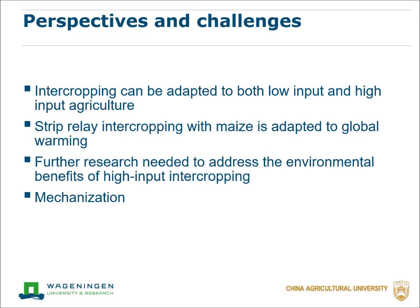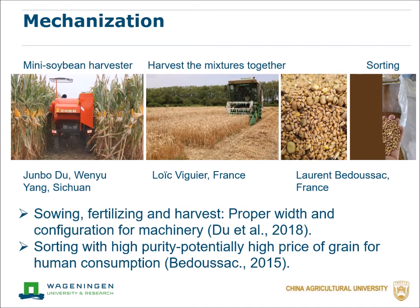However, further research is needed to address the environmental benefits of high-input intercropping. Mechanization is still a big challenge. In China, there are currently some small machinery for sowing, fertilizing, and harvesting of the maize-soybean intercropping, but we still need to design proper configurations for suitable machinery. In France, there is some machinery for harvest of simultaneous intercropping, but if we want high-purity grain for human consumption, we still need machinery for sorting with high purity.